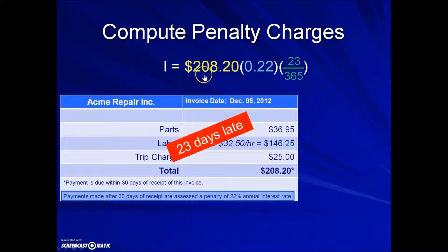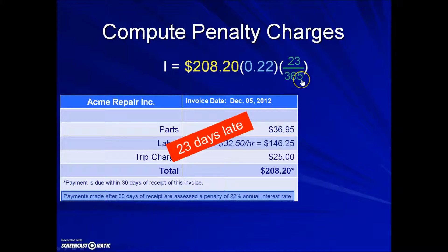Replacing those variables with the values, we take the principal times the rate, and either using a fraction key on your calculator or multiplying by 23 and dividing by 365, will result in a penalty or interest charge of $2.89.